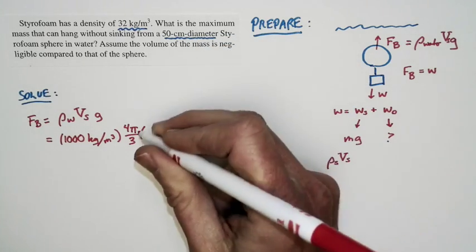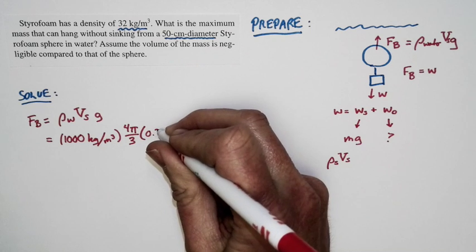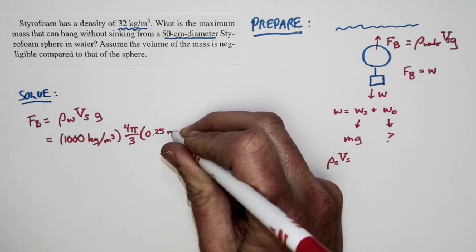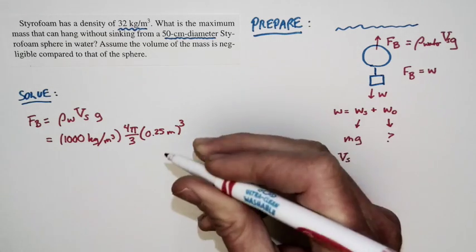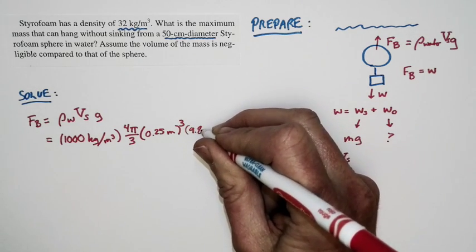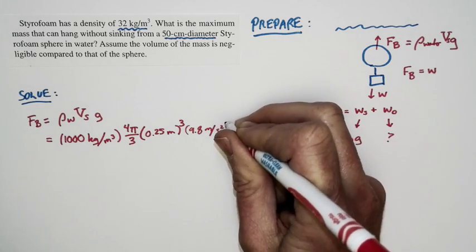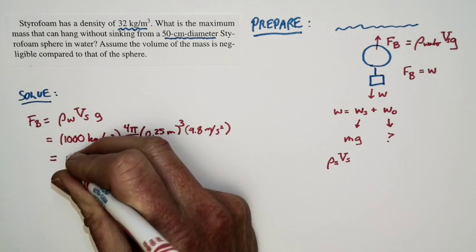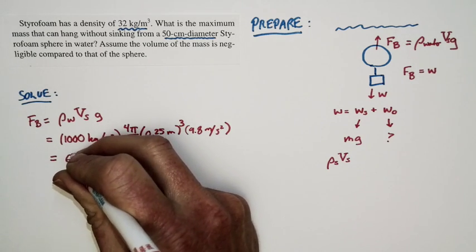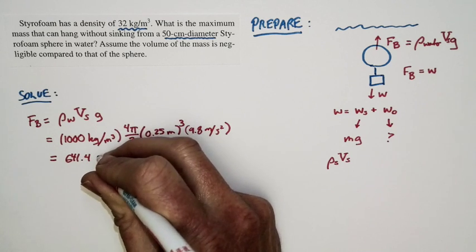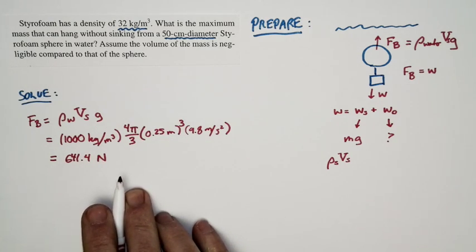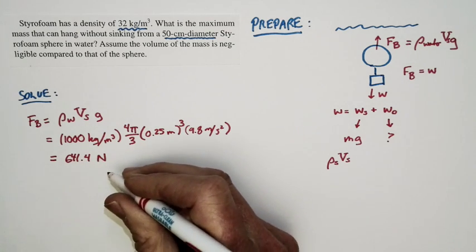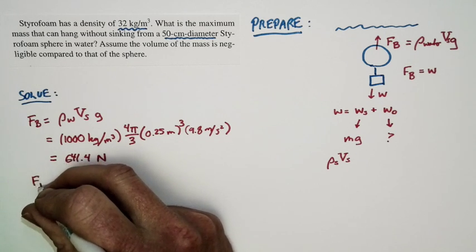Well, the diameter of the sphere is 50 centimeters. So the radius is 0.25 meters, 25 centimeters. And then I multiply that times G, which is 9.8 meters per second squared. If I solve for the buoyant force, I get 641.4 newtons. Now we're keeping extra significant figures because this is an intermediate stage of the calculation. Now this number, the buoyant force, is just equal to the weight force.